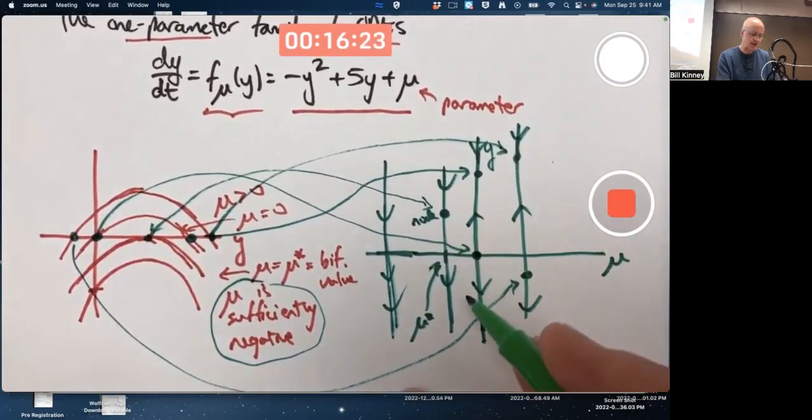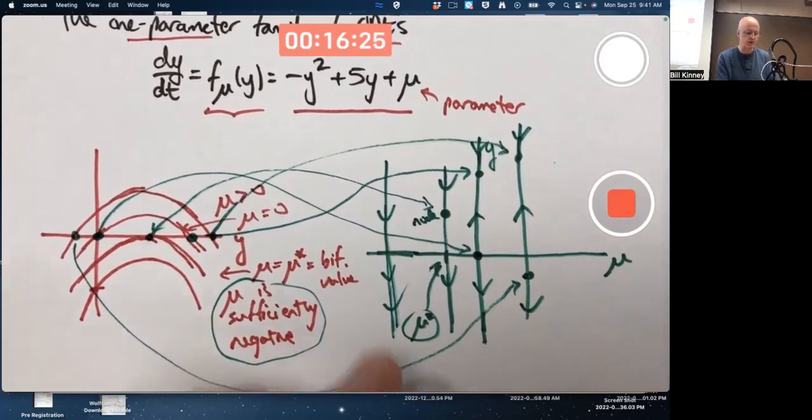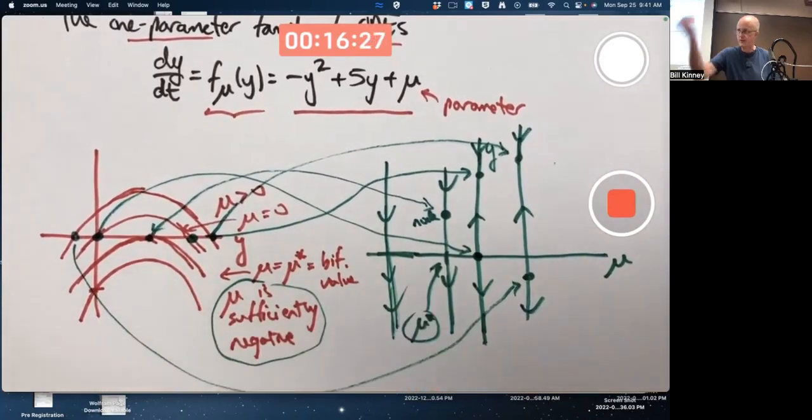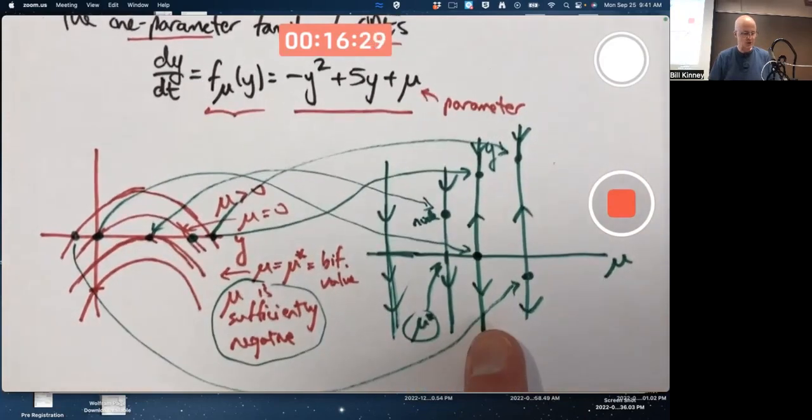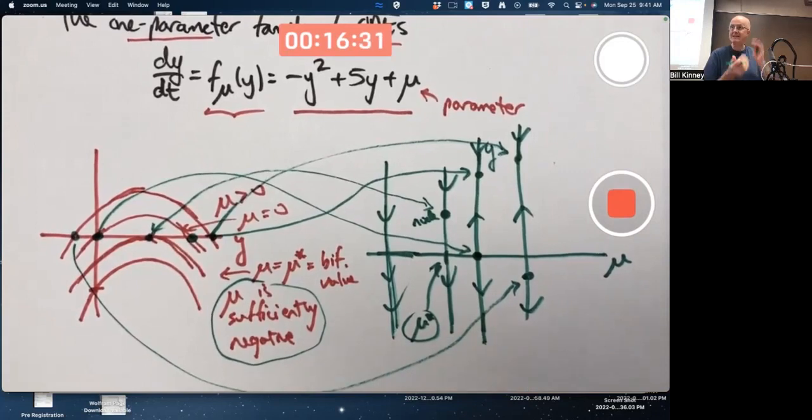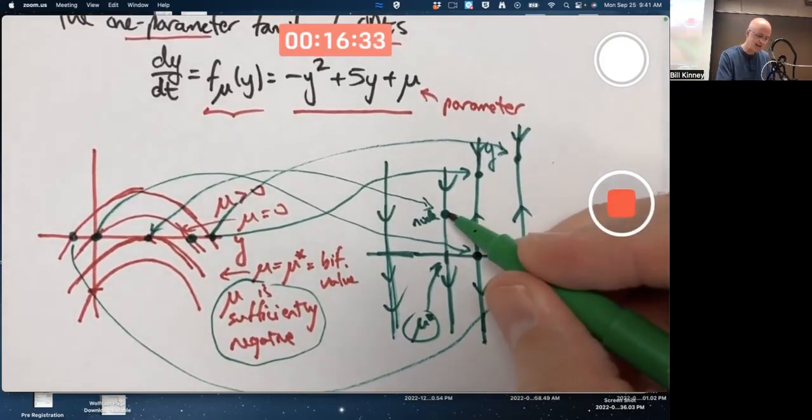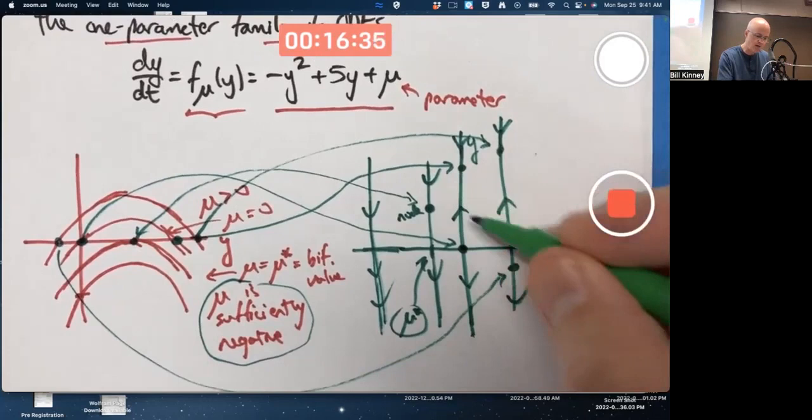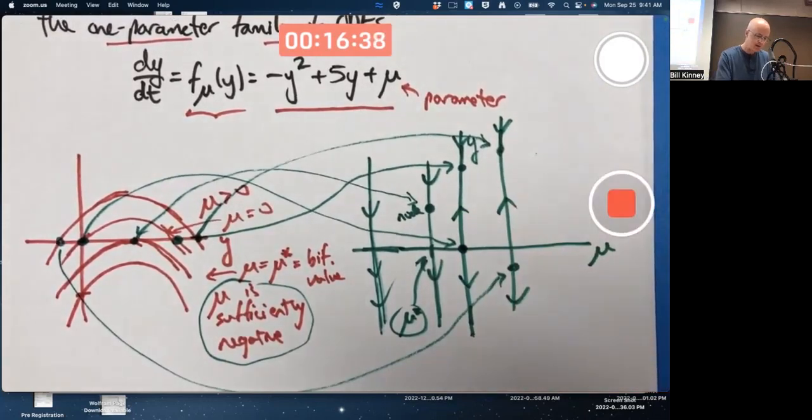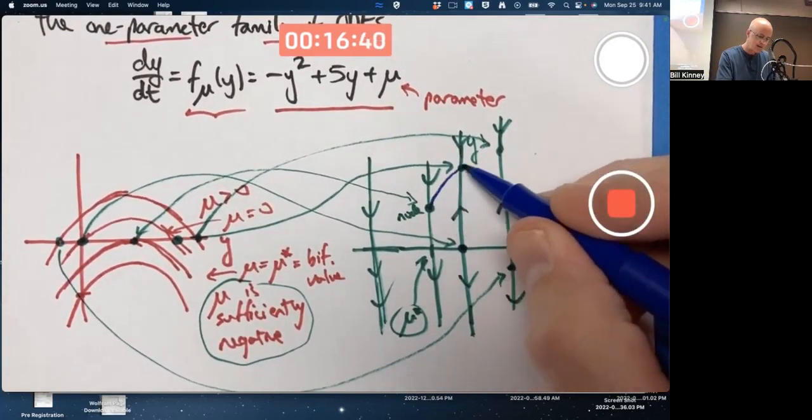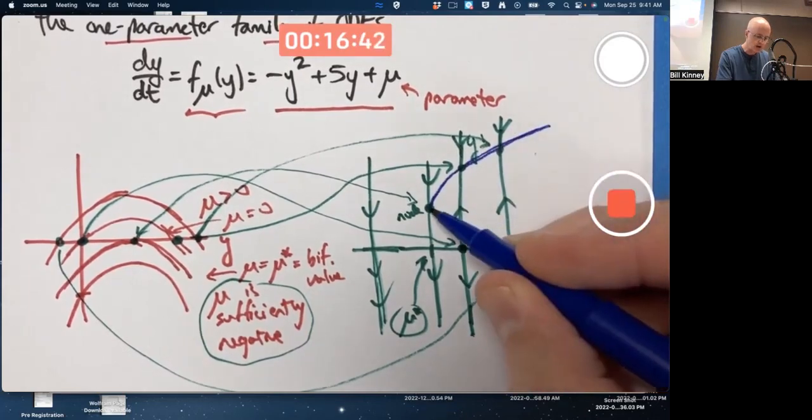So a big change occurs at mu star, where you go from no equilibrium points to briefly one to two. It bifurcates into a fork. And technically speaking, this can be drawn for all values of mu. And so we can also draw the curve of equilibria, if you will, which is a sideways parabola here.